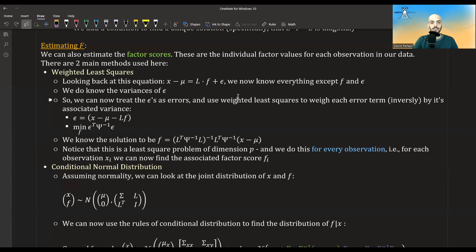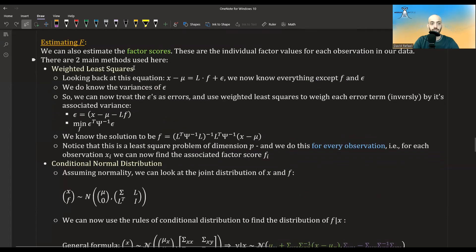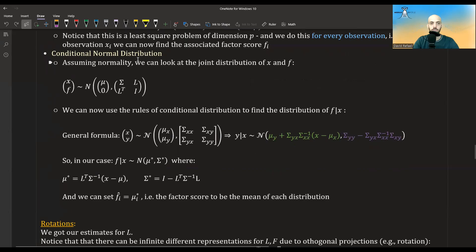And so notice that this is a least square problem of dimension P. So not of dimension N, but of dimension P. And we have to do this for every observation. So for each observation, xi, we can use this least squared solution of dimension P to find the factor scores fi associated with xi. But also notice that this thing doesn't change. So it's n problems of least squares. But in reality, this is just one matrix. We can expand this to be a matrix instead of a vector, and then just multiply the two matrices and get the results for all of the observations in our data. So this is one way of doing this. It's called weighted least squares.